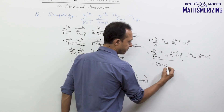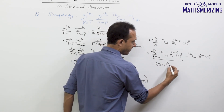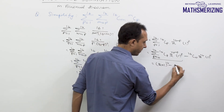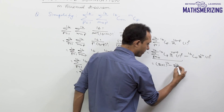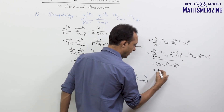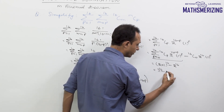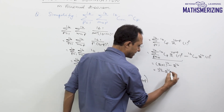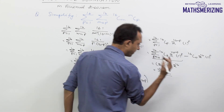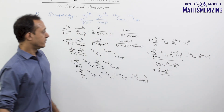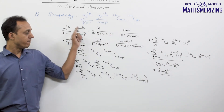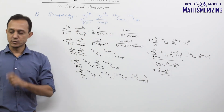This is nothing but the binomial expansion of (a plus b) to the power n, and here it will be 2 to the power 16. So the answer to this question will be 3 to the power 16 minus 2 to the power 16. This is how we solve these questions.